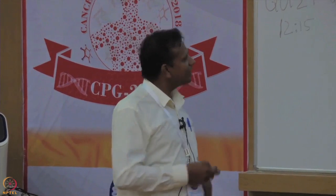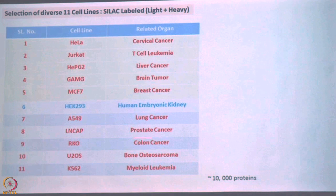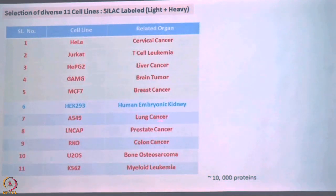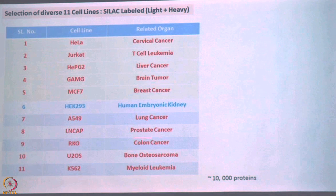We tried to ask this question and thought to select 10–11 cancer cell lines. We take HeLa cervical cancer, Jurkat leukemia, HepG2 liver cancer, Gamgi brain tumor, MCF breast cancer, A549 lung cancer, LNCaP prostate, RKO colon, U2OS bone, and K562 myeloid. Different types of cancer are there. Why is there not one drug for all cancers? Impossible. Origin is different, metastasis is different — that means it is very complex.